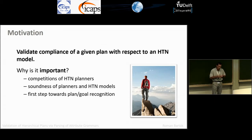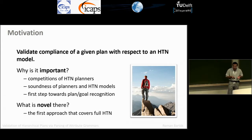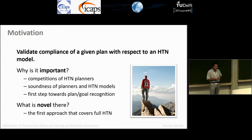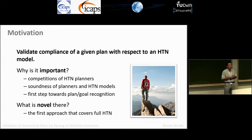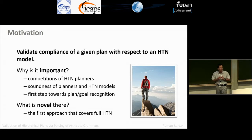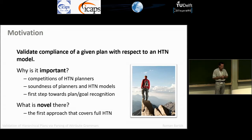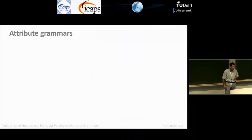You recognize a subsequence of actions and ask: what's the task that agent is going to solve? This is not a new topic — there are already people trying to do plan recognition and goal recognition. But when you look at the papers, you see they are not actually covering full HTN; almost always it's a subset of HTN, something is missing. I believe this is the first approach that does a really complete validation, covering all constraints in HTN.